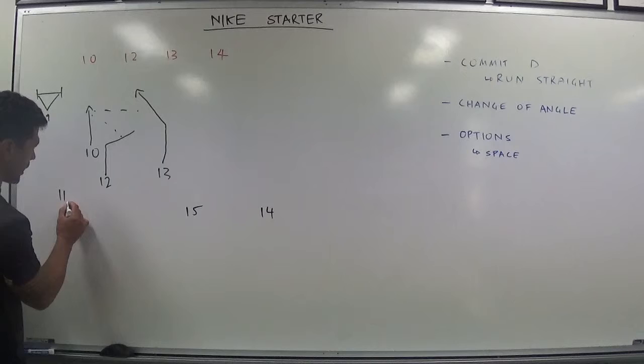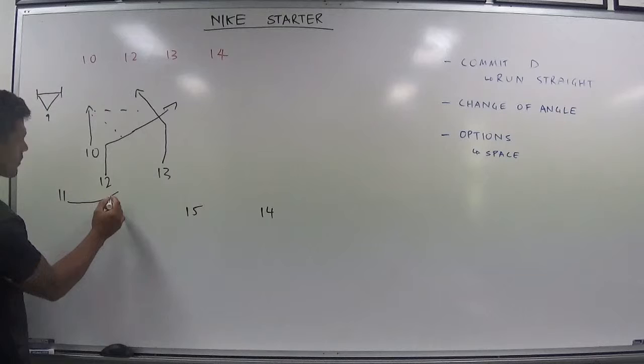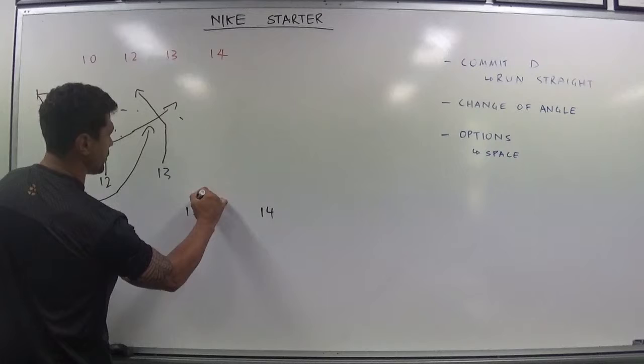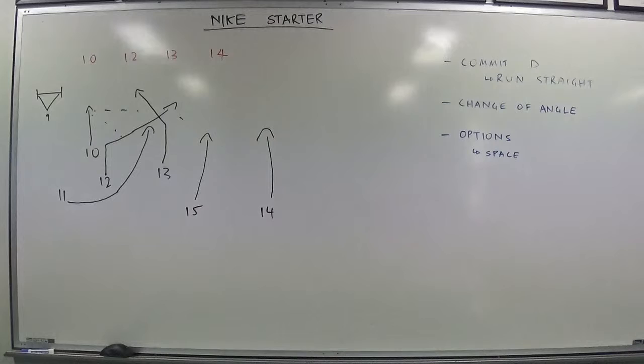So if 12 gets the ball out here, the 11 can either jump on his inside, the 12 can play to 15 out wide with options out here, with an overlap of options.